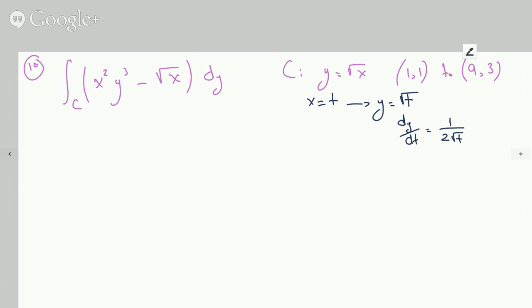We can come to the line integral and plug everything in. So x squared would be t squared, y cubed would be t to the half.